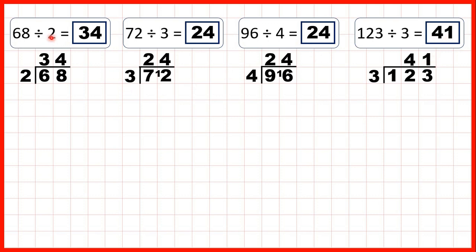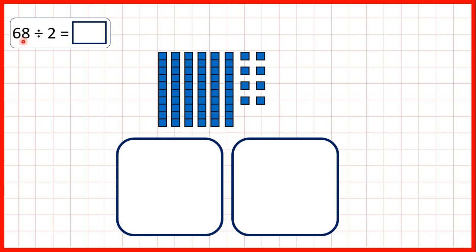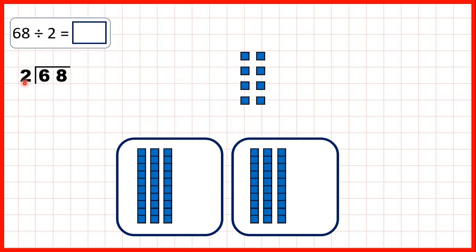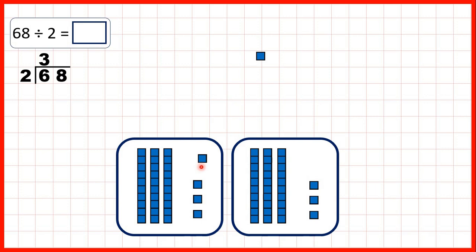So let's take a closer look at these questions. First, we had 68 divided by 2. We divided our 6 tens by 2, and that gave us 3, because we can see we have 3 tens in each group. Then we divided our 8 ones by 2, and that gave us 4 ones in each group — so 4 as the ones digit of our answer: 34.